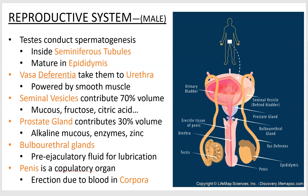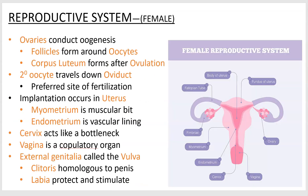A lot of animals do have an actual penis bone — it's called a baculum. You don't have to know that. Your dog and cat have a penis bone if they're boys.